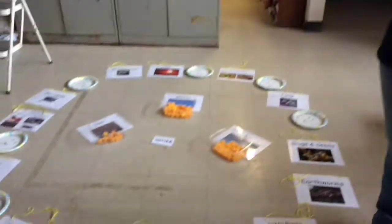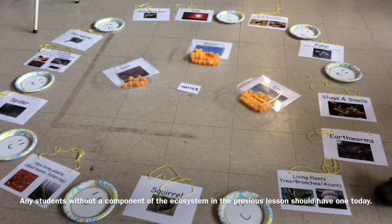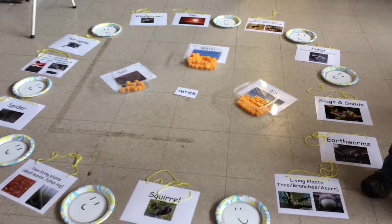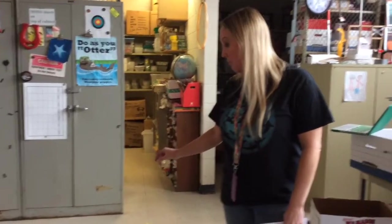This model will be very similar to the previous day's model tracking energy through the ecosystem. We have the same setup with the necklace cards and students in between taking notes, but instead of string representing energy, we're going to be using small square blocks representing the matter and the flow of matter in an ecosystem model.